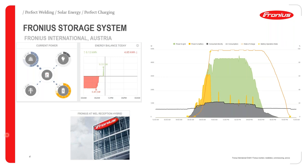A Fronius storage system example from the Fronius International headquarters in Austria incorporates a Fronius Smart Meter. Because of this, consumption data is visible along with energy flow to/from the grid and battery. With a Fronius Smart Meter installed, SolarWeb provides a much clearer and more complete picture of all data from the installation.